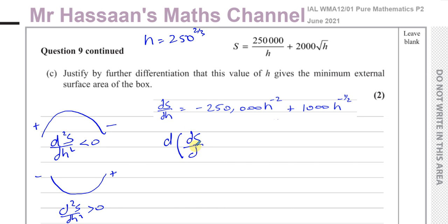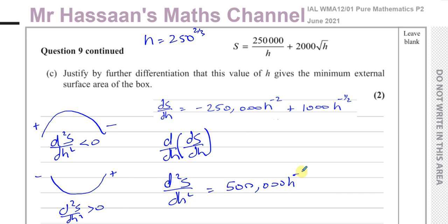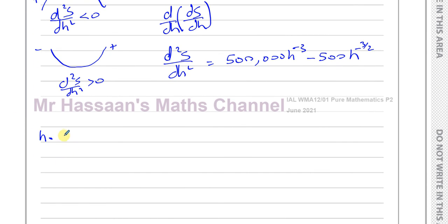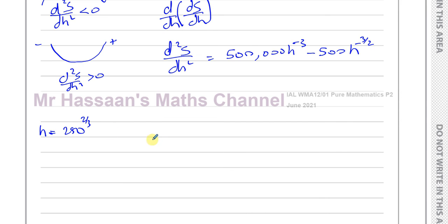Differentiating dS/dH again: minus 2 times minus 250,000 gives positive 500,000 H to the power of negative 3. And minus 1/2 times 1,000 gives minus 500, H to the power of minus 3/2. So d²S/dH² equals 500,000 H⁻³ minus 500 H^(−3/2). We now substitute H equals 250 to the power of 2/3 into this expression.